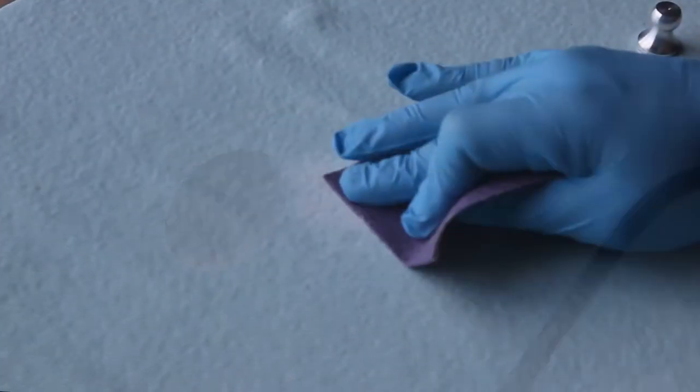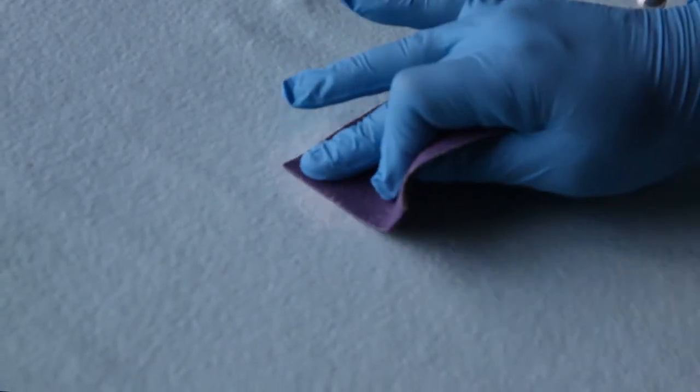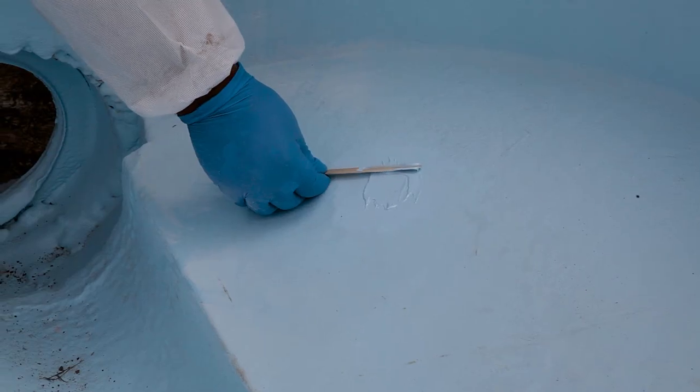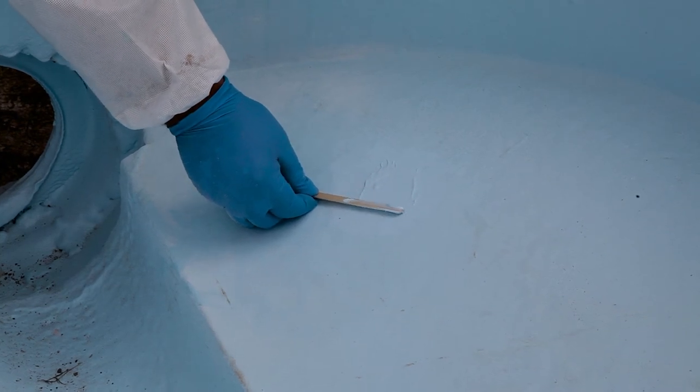To make repairs after adhesion pull-off testing, abrade an area approximately 6 inches in all directions. Mix a small amount of coating and apply, taking care to extend the coating across the abraded area.